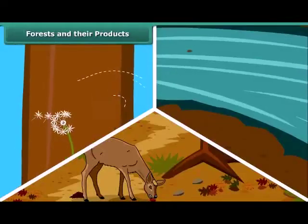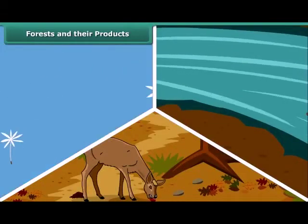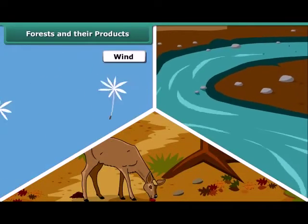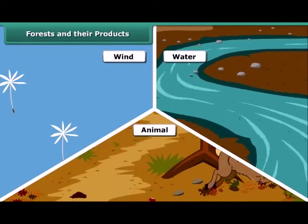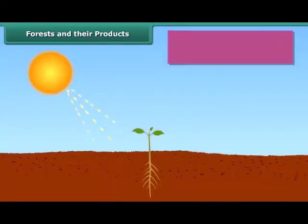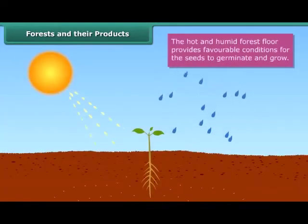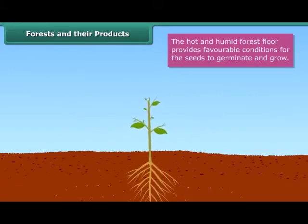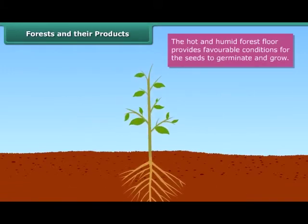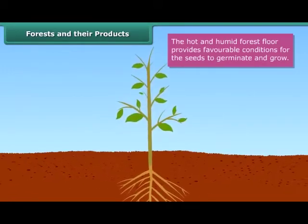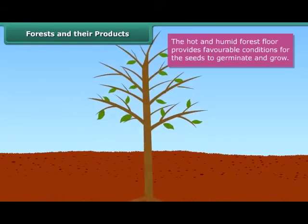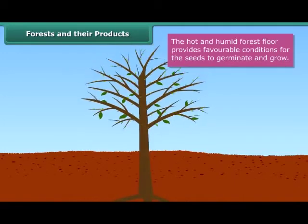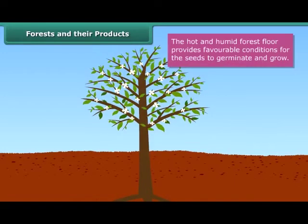Seeds produced by trees are dispersed by wind, water and animals. The hot and humid forest floor provides favorable conditions for seeds to germinate. Seedlings emerge from germinated seeds and grow into saplings first and then into trees.